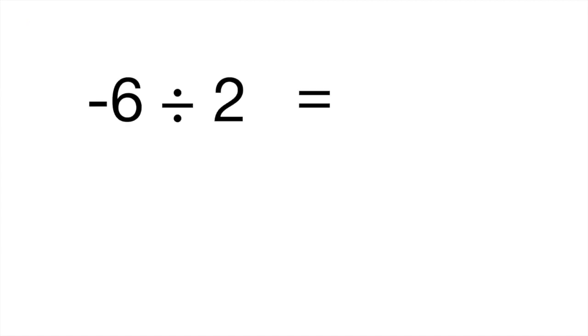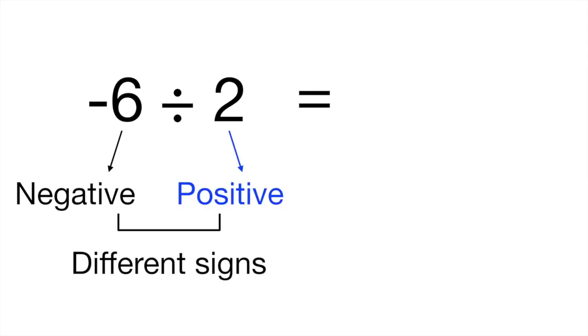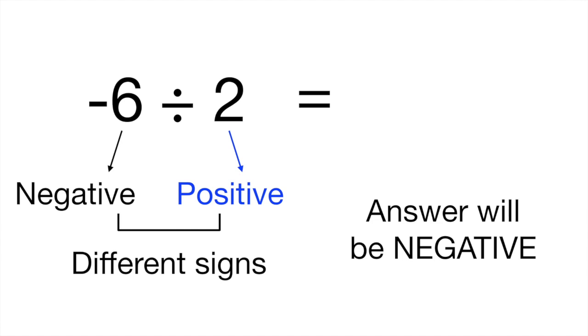Okay so let's go ahead and do five problems together and I'm going to blast through these. So negative 6 divided by 2, we have negative and a positive number different signs. So what's the answer? Absolutely negative. Negative 3.